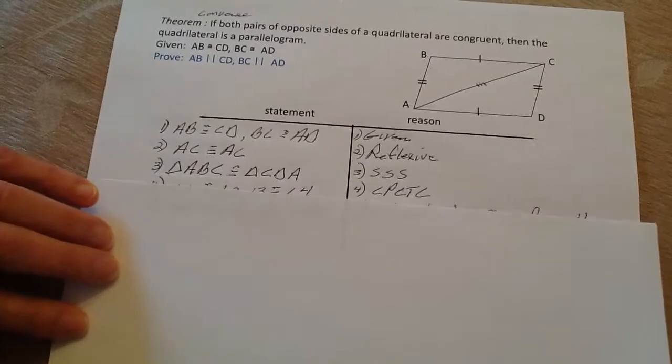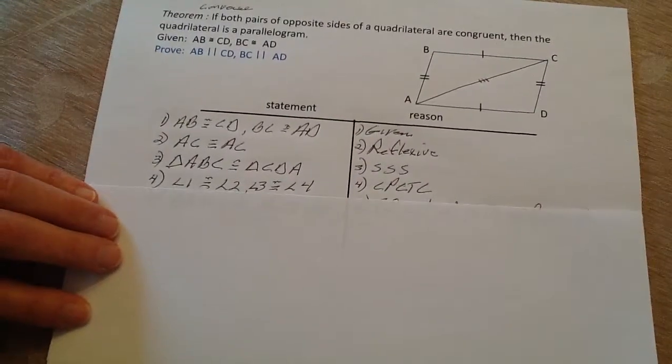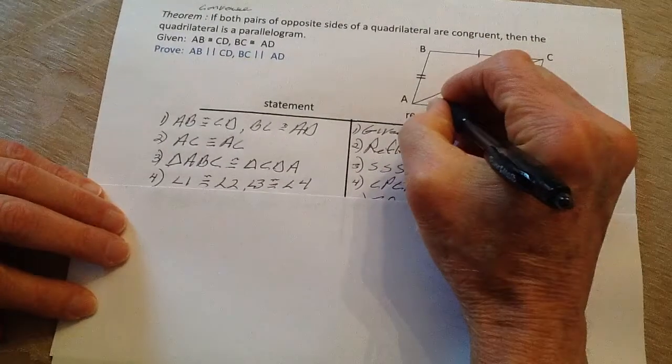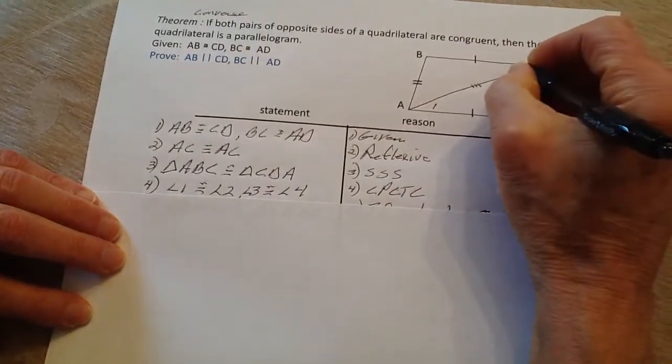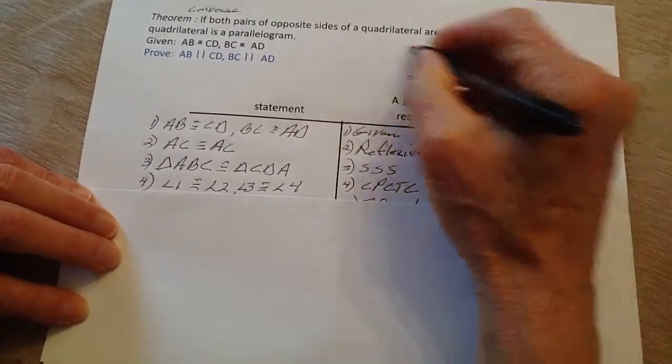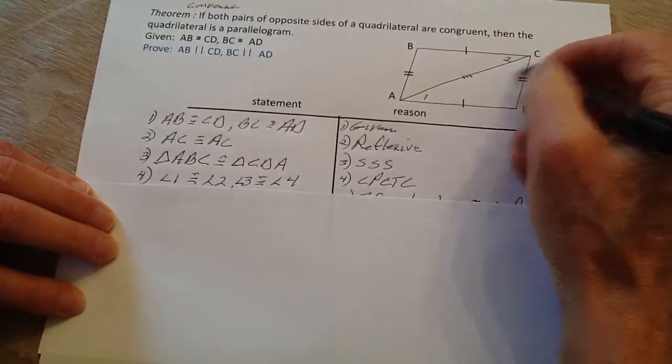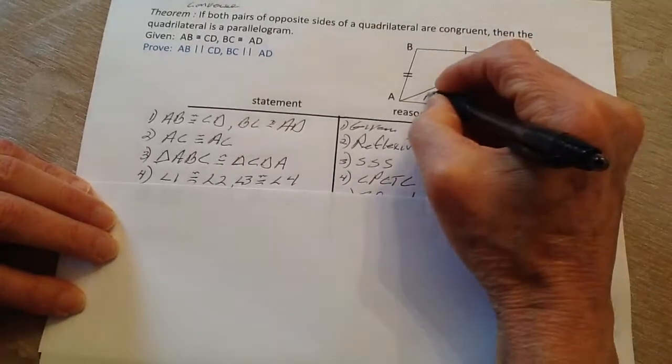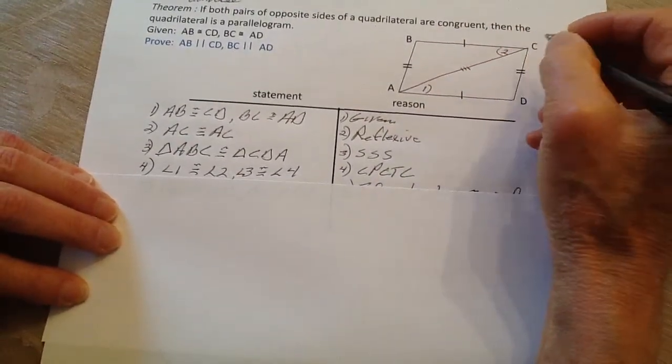Because of that, we know that the angles... I'm going to label angle one right here, angle two here. If these two angles right here are congruent because of corresponding parts, then this would be the transversal.